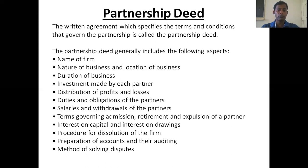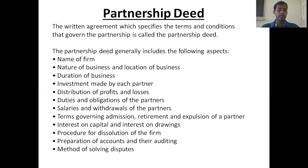The contents of a partnership deed should include: name of the firm, nature and location of the business, duration of the business, investment made by each partner, distribution of profits and losses, duties and obligations of the partners, salaries and withdrawals of the partners, terms governing admission, retirement and expulsion of a partner, interest on capital and interest on drawings, procedure for dissolution of the firm, preparation of accounts and their auditing, and method of solving disputes.